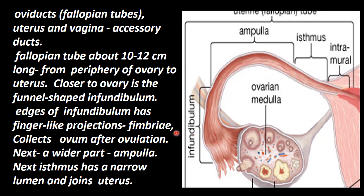Then comes the ampulla, which is the wider region of the fallopian tube. The finger-like projections on the infundibulum are called fimbriae. The fimbriae attach to the ovary, collect the ovum, and conduct it through the oviduct to the uterus.